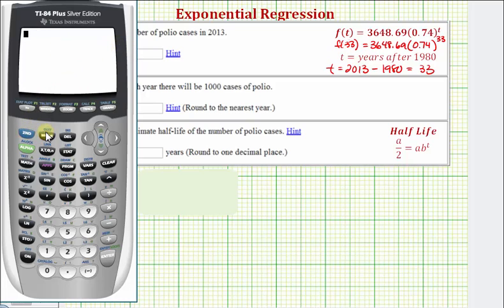we can just enter y1 of 33 from the home screen. So second mode for quit, vars, right arrow, enter, enter, and in parentheses, 33. Remember, this is the number of polio cases in the thousands, so to answer the question, we do want to multiply this by 1,000 to know the actual number of cases. So times 1,000, let's round to the nearest whole number. So our prediction is approximately 177 cases of polio in the year 2013.